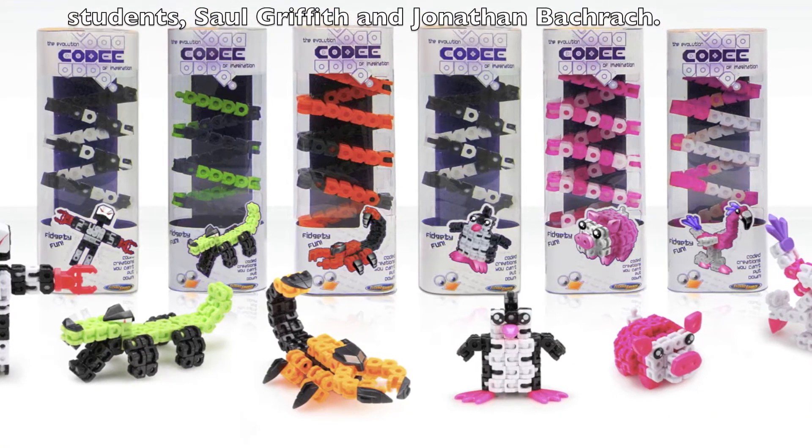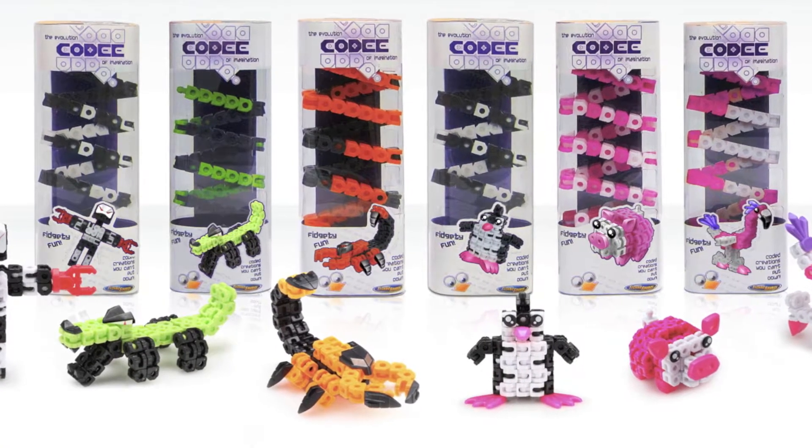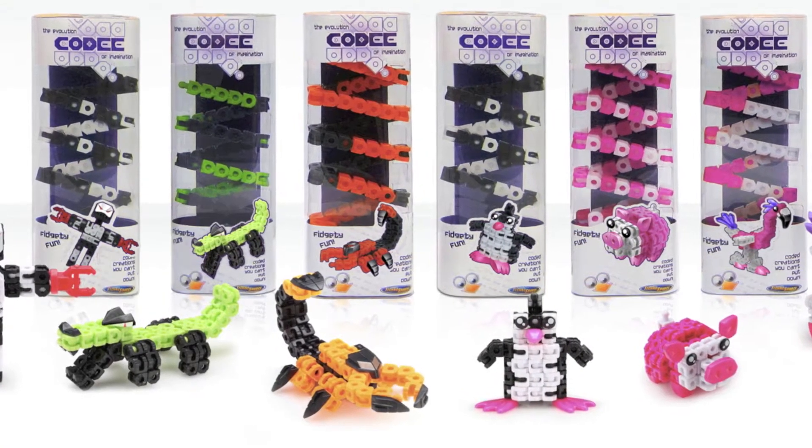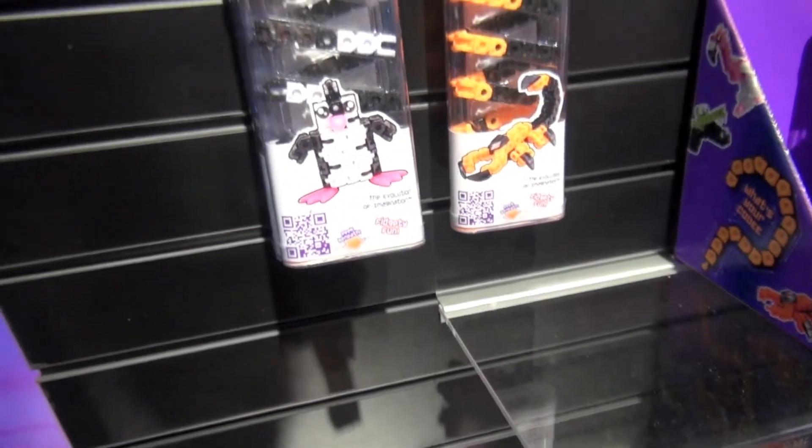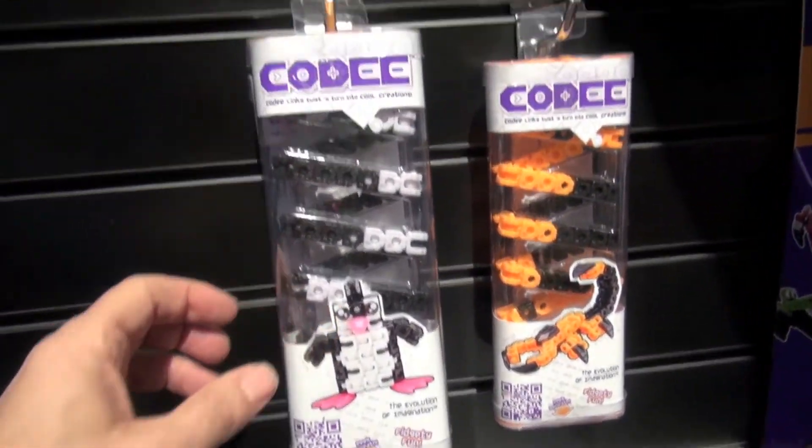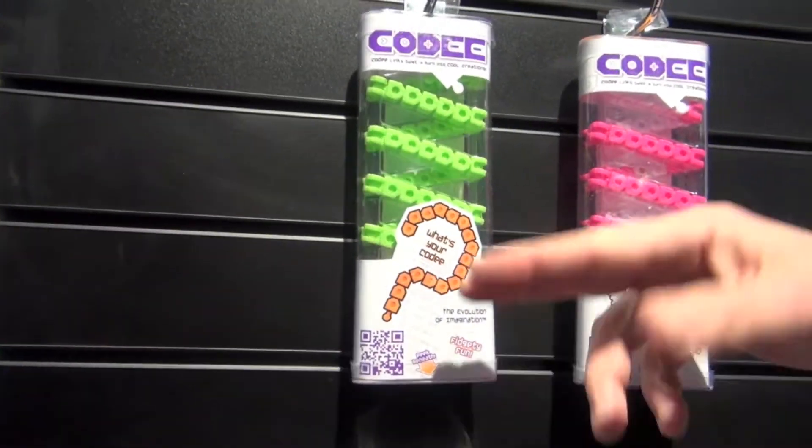And then over there, these have all the characters. So you have six different characters, three girl and three boy. And then also you have your blind packs that have a code inside, or you can go make your own.